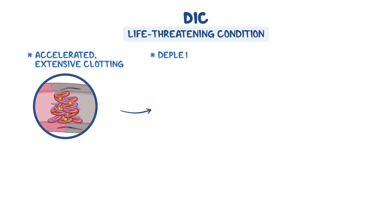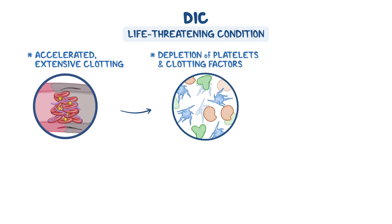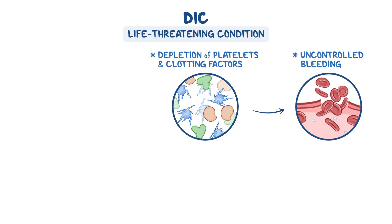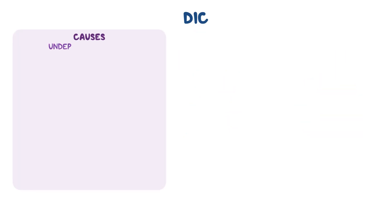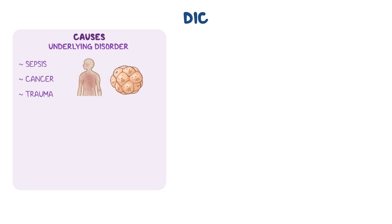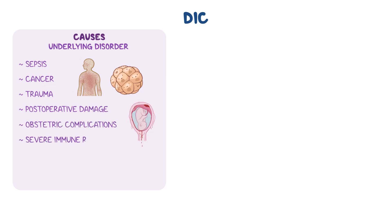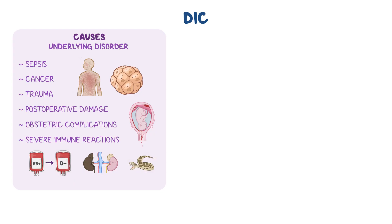As a quick recap, DIC is a life-threatening condition characterized by accelerated, extensive clotting, which causes depletion of platelets and clotting factors and leads to uncontrolled bleeding. DIC is caused by an underlying disorder that triggers uncontrolled activation of the coagulation cascade, such as sepsis, cancer, trauma, post-operative damage, obstetric complications, or severe immune reactions like incompatible blood transfusion, organ transplant rejection, or toxins from snake or spider venom.